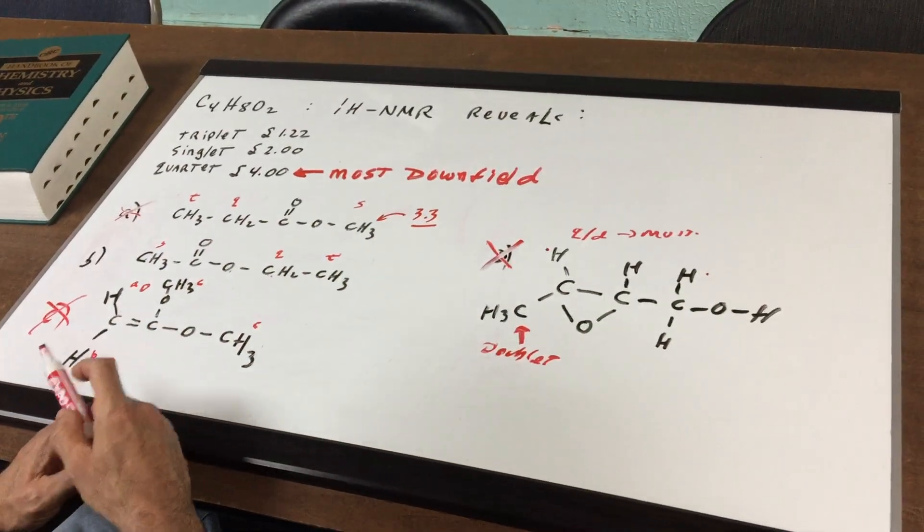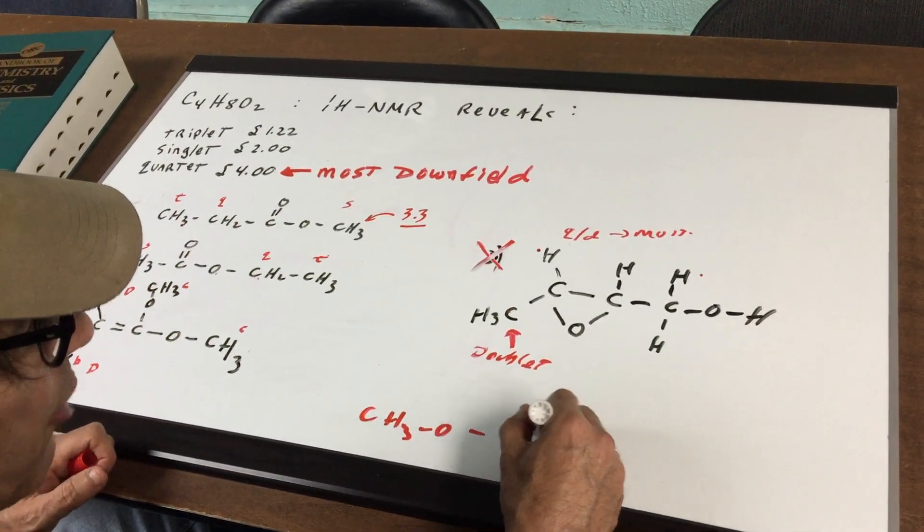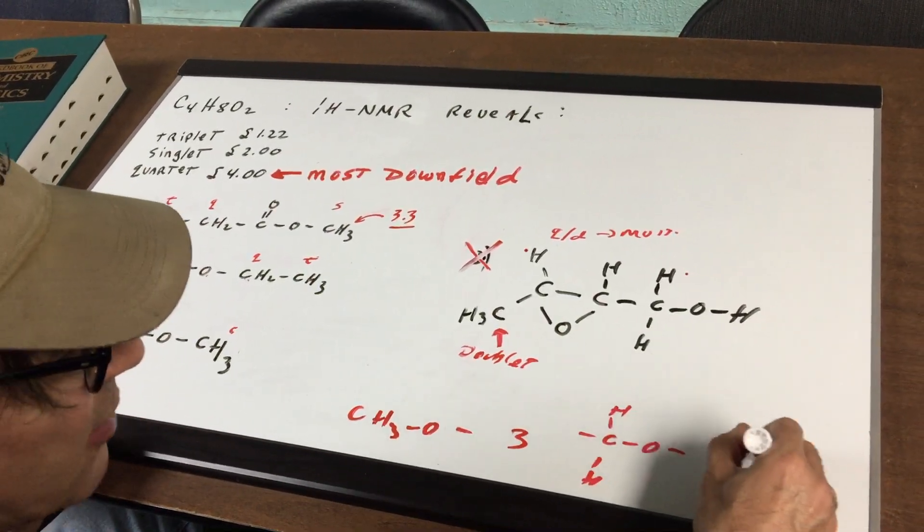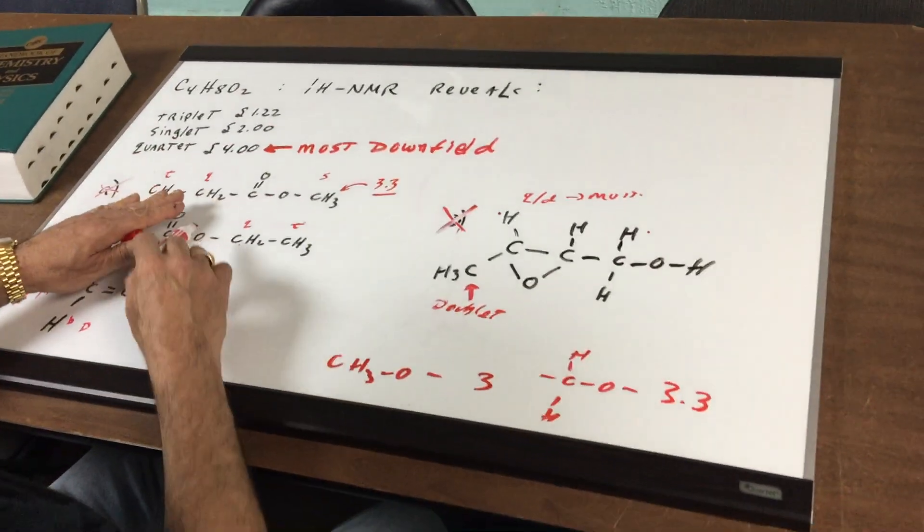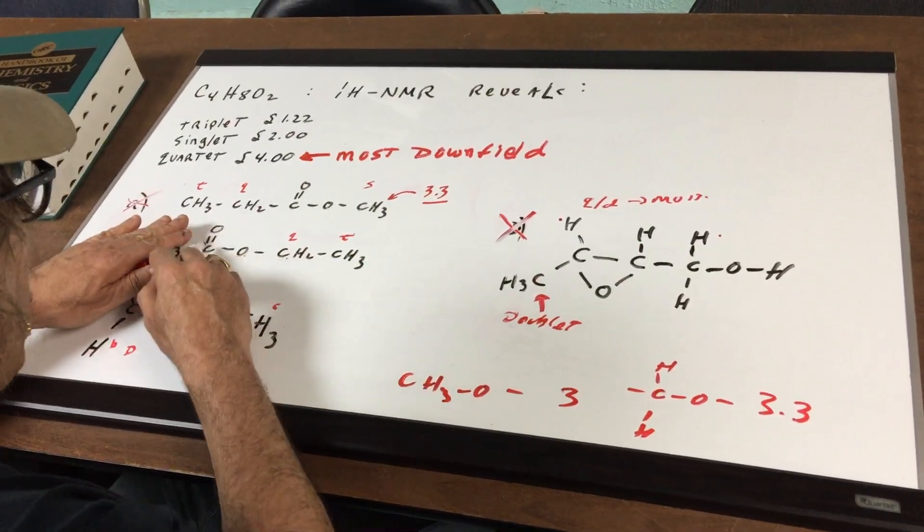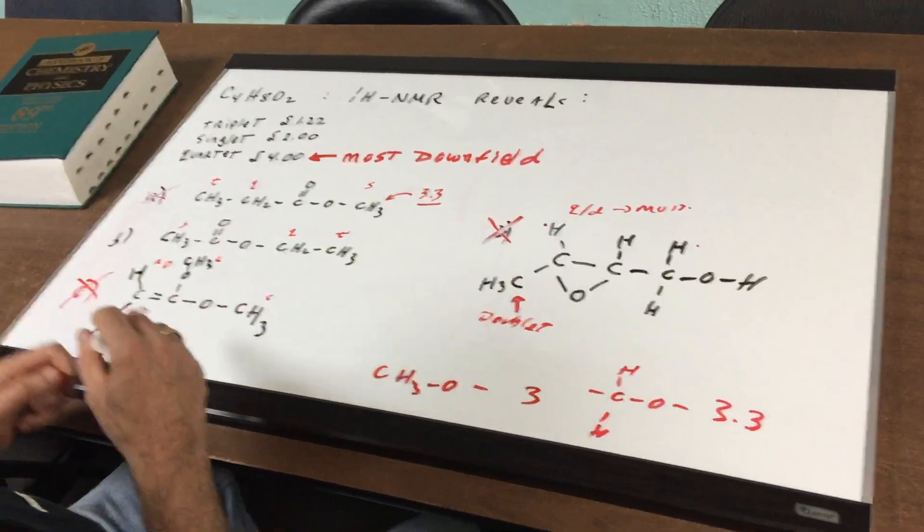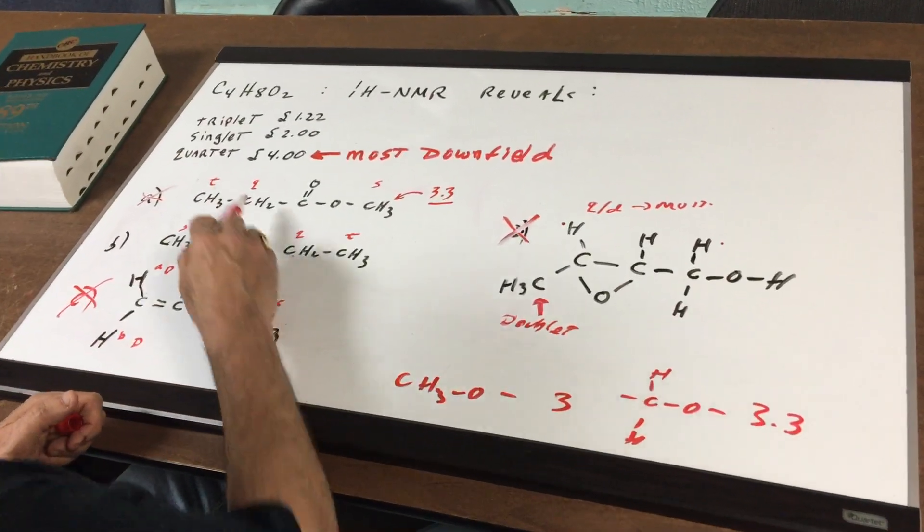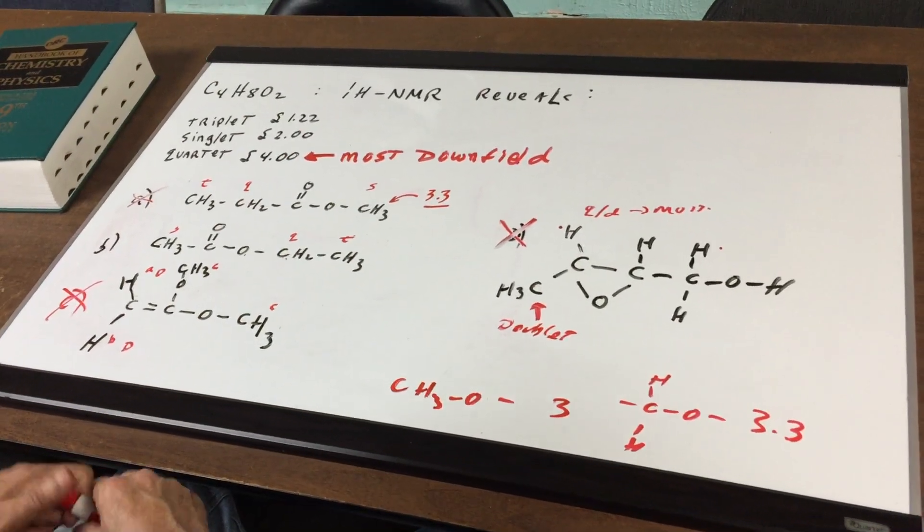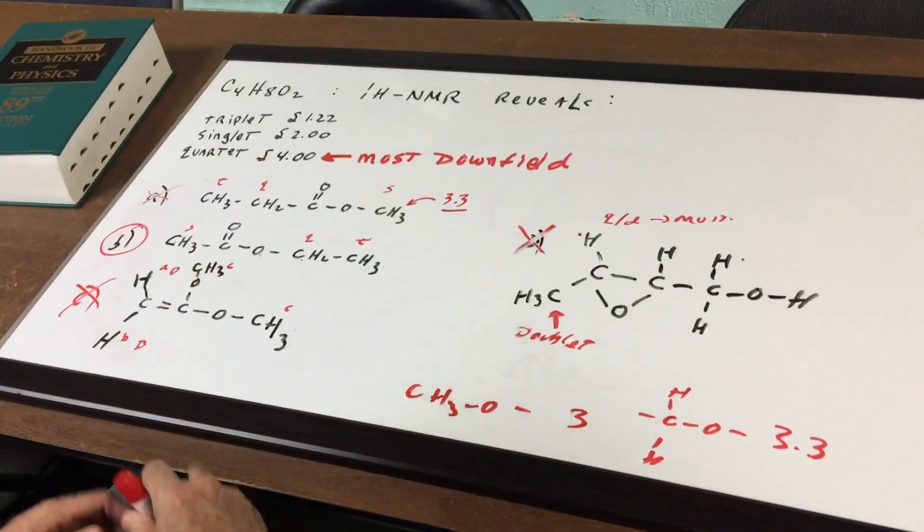Now, where would this quartet come in around? Well, we know a CH3O comes in around 3. So if it was a CH2 with an O, maybe a little bit more, like 3.2, 3.3. And you can see there's another electronegative group that's a carbonyl. So I would expect this quartet to come in very close to 4. And as you can see, the quartet comes in around 4, 4.00 exactly here. And it would be the most downfield signal. So choice B would be the correct answer.